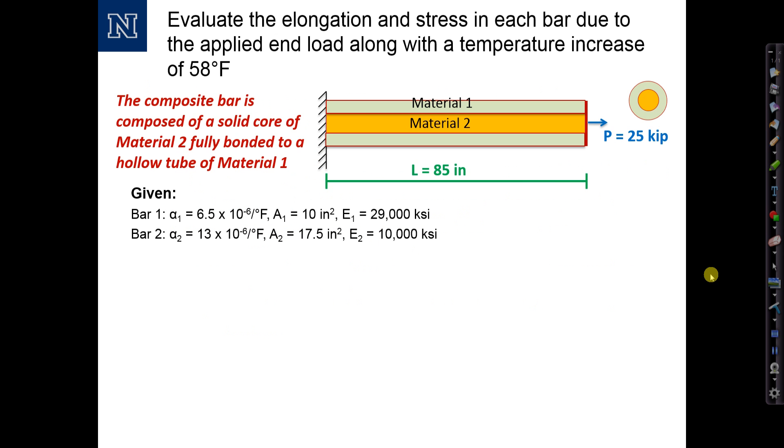Here's the first problem that we'll be looking at here today. What we have here is a bar of two materials fully bonded together, supported at the end. The composite bar has a solid core of material 2 and bonded to a hollow tube of material 1. The coefficients of thermal expansion, cross-sectional areas, and elastic modulus are given for each material in the system. The system is subjected to an applied end load of 25 kips, and also a temperature increase of 58 degrees Fahrenheit.